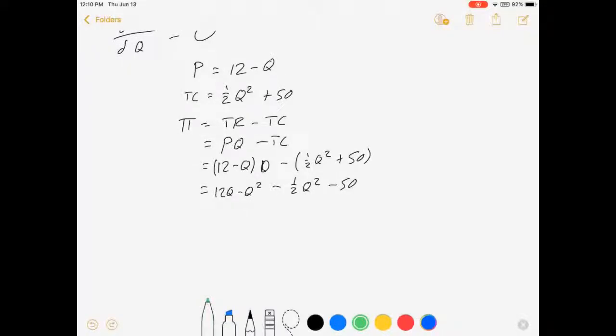So let's do some profit maximizing here. If I want to maximize profit, I'm going to take the derivative of the profit function with respect to Q and set that thing equal to zero.